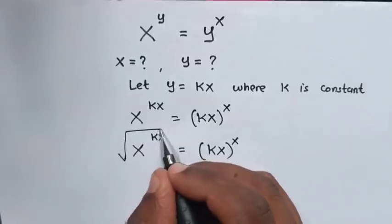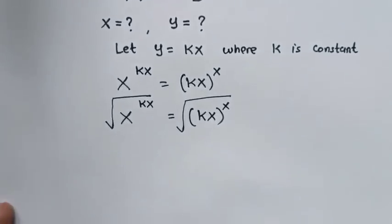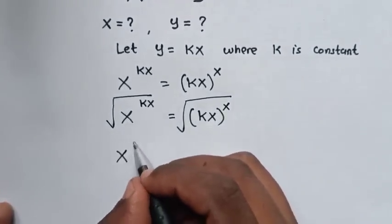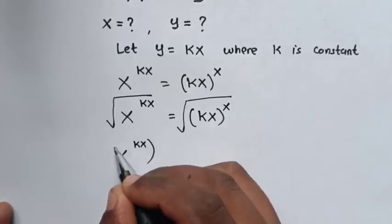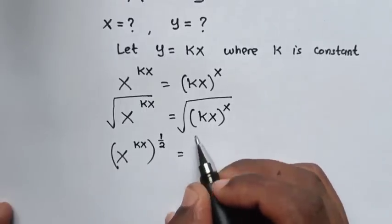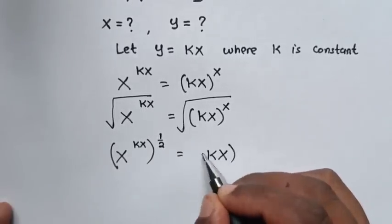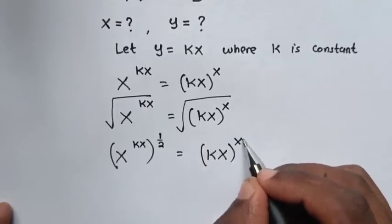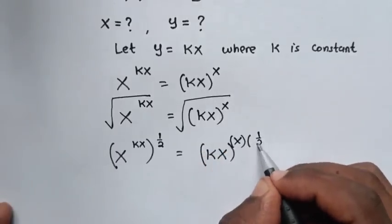Then we apply square root on both sides. Our equation will be x^(kx) bracket times square root, which is the same as power of one-half, is equal to (kx)^x bracket times power of one-half.